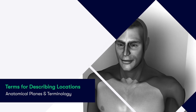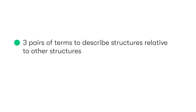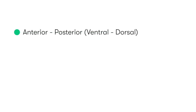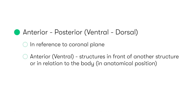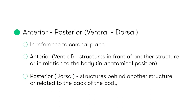To describe the location of anatomical structures, there are three pairs of terms used to describe structures relative to other structures or the body as a whole. These include anterior and posterior, or ventral and dorsal, which are in reference to the coronal plane. Anterior or ventral describes things in front, while posterior or dorsal refers to structures located behind another structure or toward the back of the body.